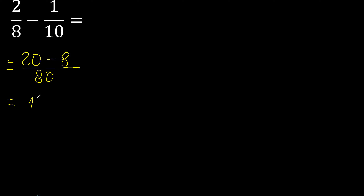12 over 80 can be simplified because it can be divided by the same number. Divided by 2: 12 divided by 2 is 6, 80 divided by 2 is 40.